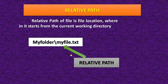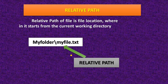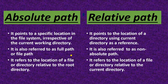What is relative path? The relative path of a file is the file location that starts from the current working directory. For example, myfile.txt is located in my folder — this is the relative path.